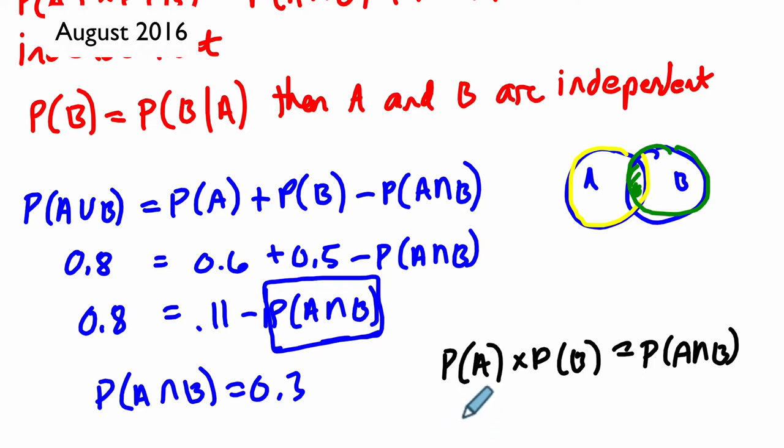Why? Well, we were just told the probability of A happening is 0.6 and the probability of B happening is 0.5. And if you multiply those two, you do get 0.3. So they're independent.